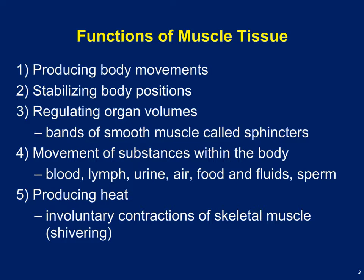Functions of skeletal muscle include producing body movements. For example, when your biceps brachii muscle contracts, your elbow will flex, reducing the angle between your radius and ulna and your humerus. Another function is to stabilize joints and body positions — to hold posture and hold you upright. Muscle tissue is also responsible for regulating the volumes of hollow organs, where smooth muscle lining the bladder and the large and small intestines helps propel substances through these organs.